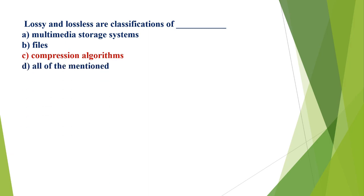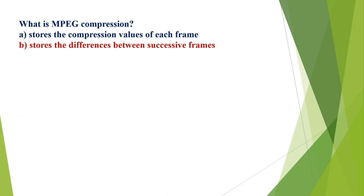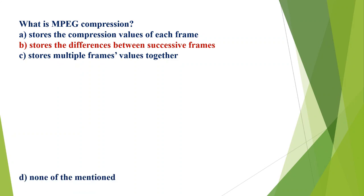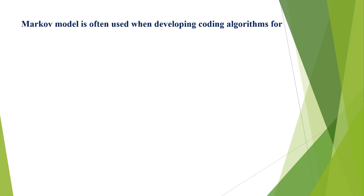What is MPG compression? A) stores the compression value of each frame, B) stores the differences between successive frames, C) stores multiple frame values together, D) none of the mentioned. The correct option is B, stores the differences between successive frames. What is the extension of the compressed audio format? A) .mp3, B) .wav, C) .rm, D) .midi. The correct option is A, .mp3.